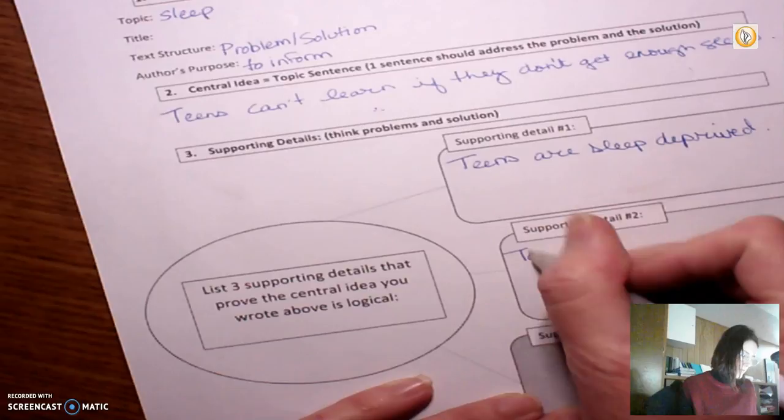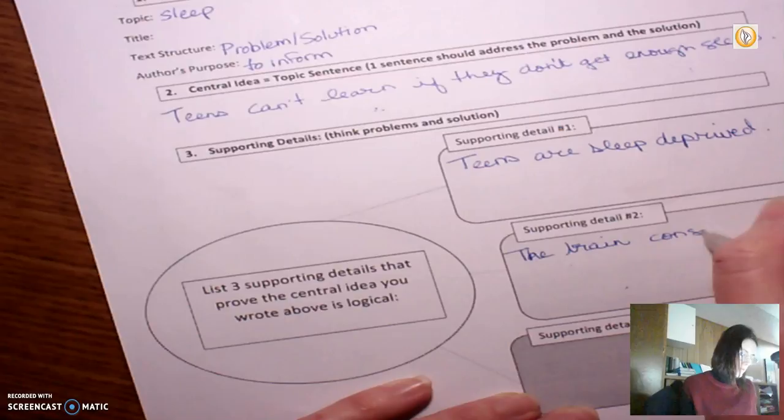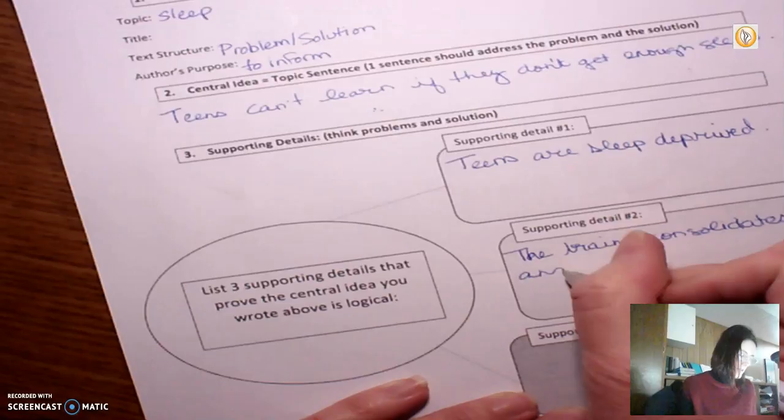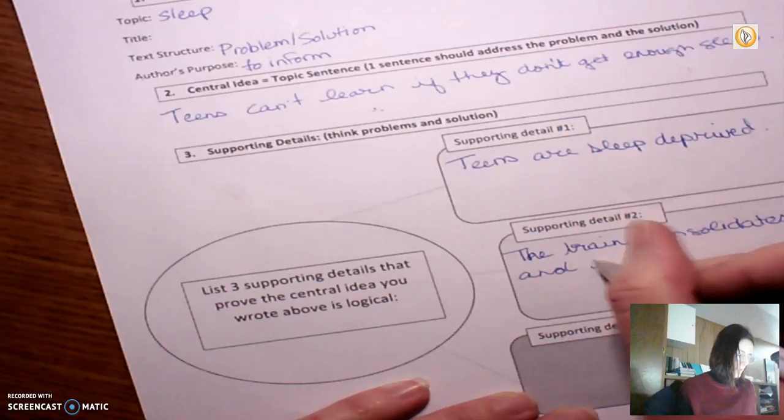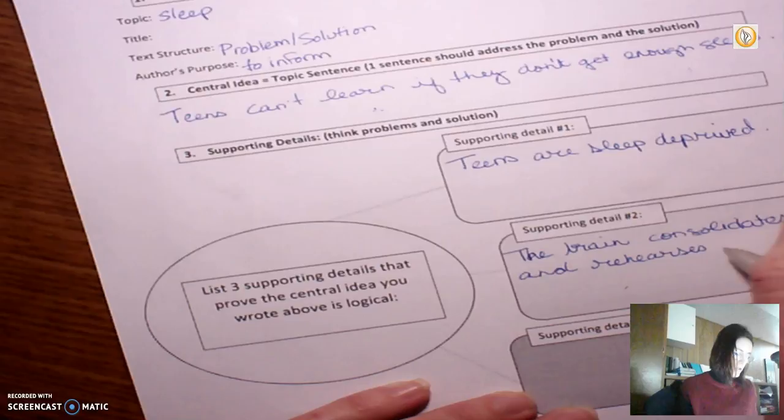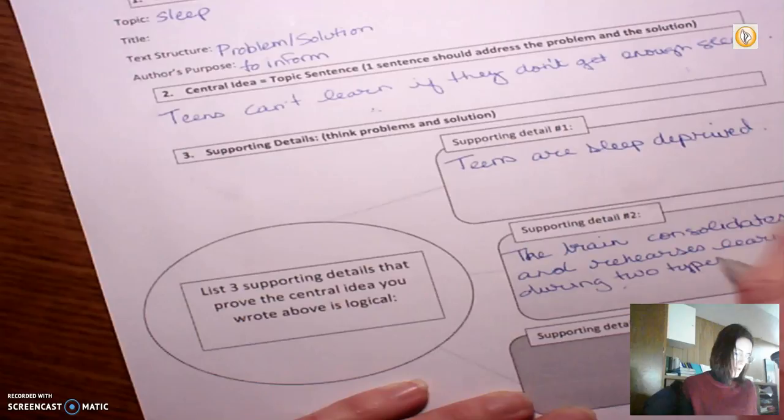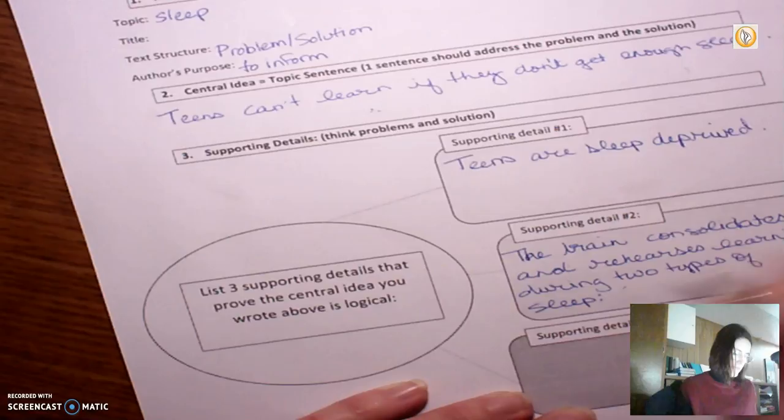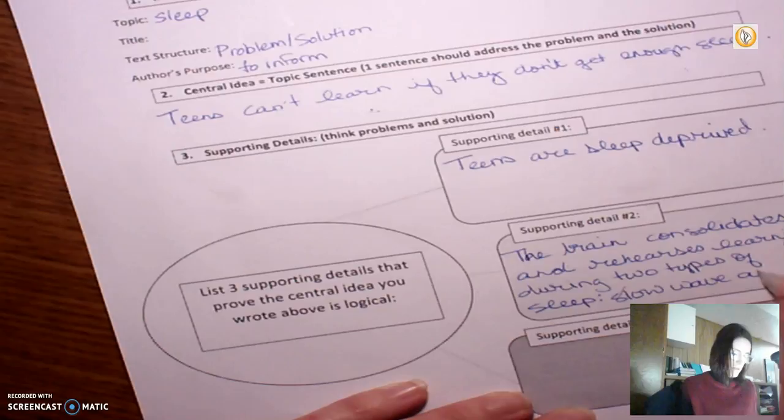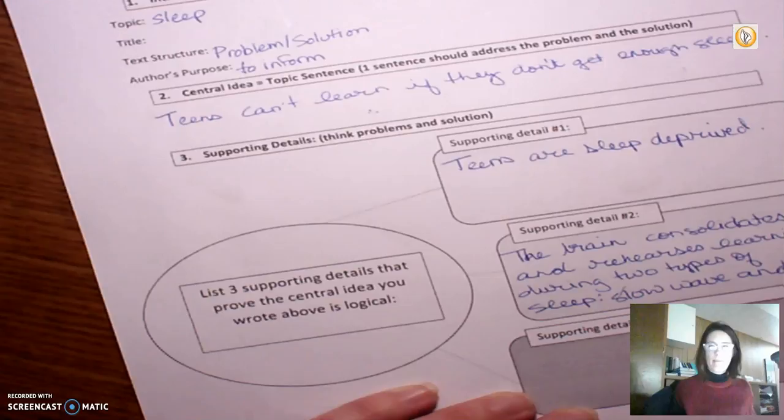Okay. So let's say the brain consolidates and - so the article says practices. I like the word rehearses. The brain consolidates and rehearses learning during two types of sleep. I'm going to do a little colon there. I'm going to get fancy. Slow wave and rapid eye movement, which I am going to use the acronym for. Rapid eye movement. Okay.